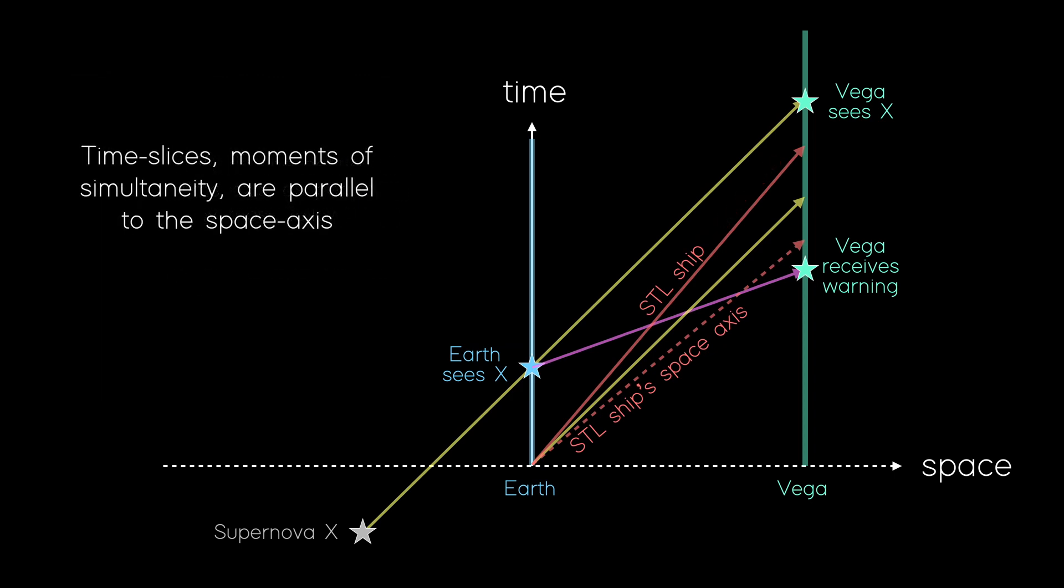Recall before that we tracked the sequence of events with sliding time slices, lines of simultaneous moments. And recall that these slices must be parallel to the space axis. So if we want to draw these time slices from the crew's perspective, they must be parallel to the red dashed line, sliding from the bottom right of the screen to the top left.